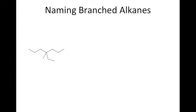This video will help you name branched alkanes by using the rules mentioned above. The first step is to identify the parent chain. In this example, the parent chain is made of seven carbon atoms, so the parent name is heptane.